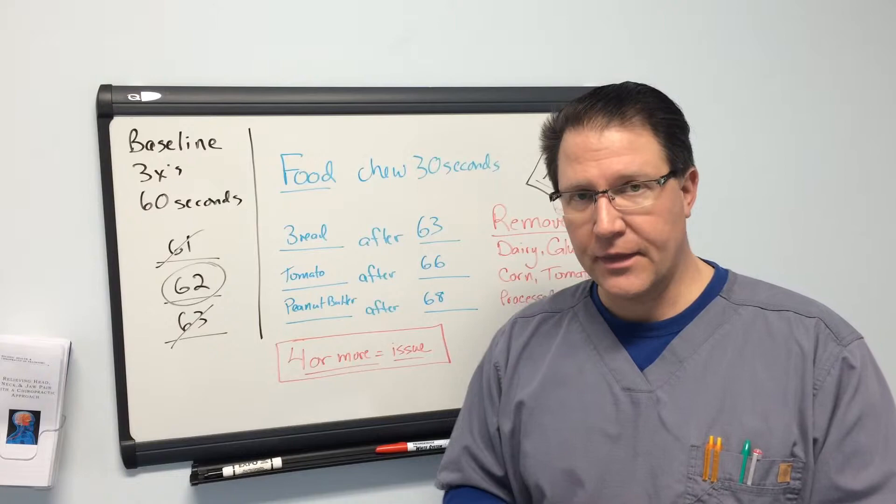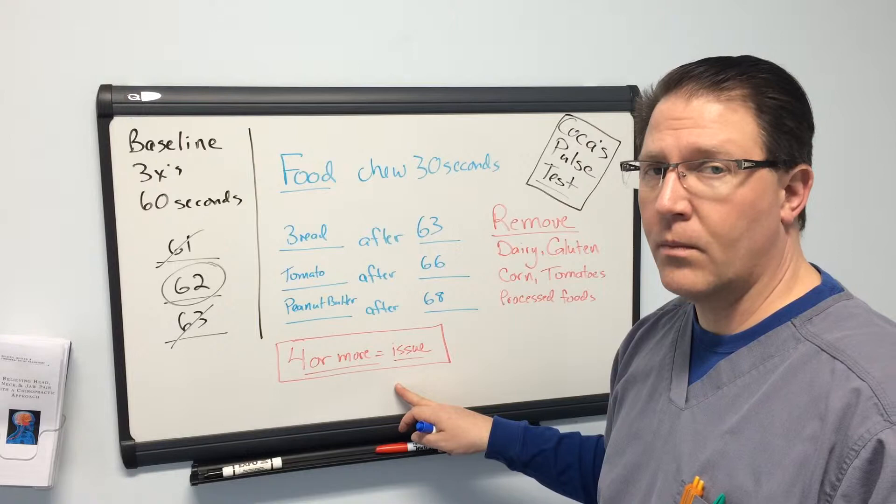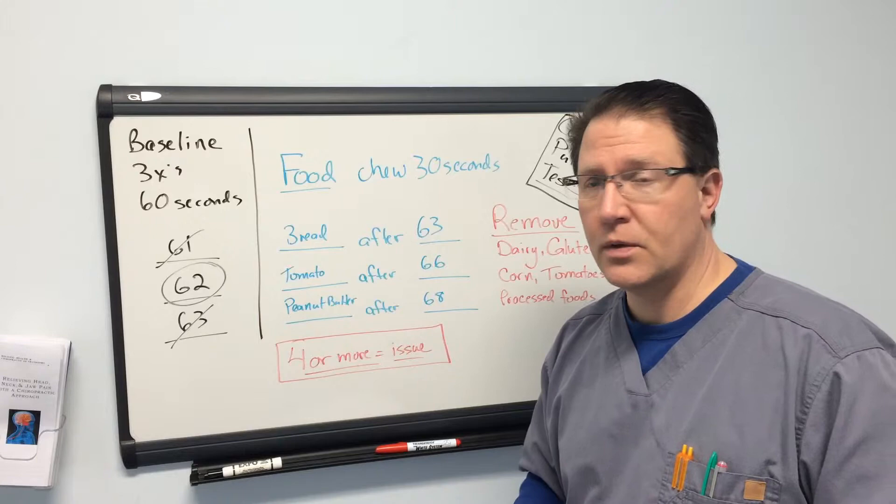So let's look at this. Our baseline is 62, bread brought us in at 63, tomato at 66, and peanut butter at 68. If you have a difference of four or more, there's an issue. Obviously, the more of a difference, the more of an issue with that food.